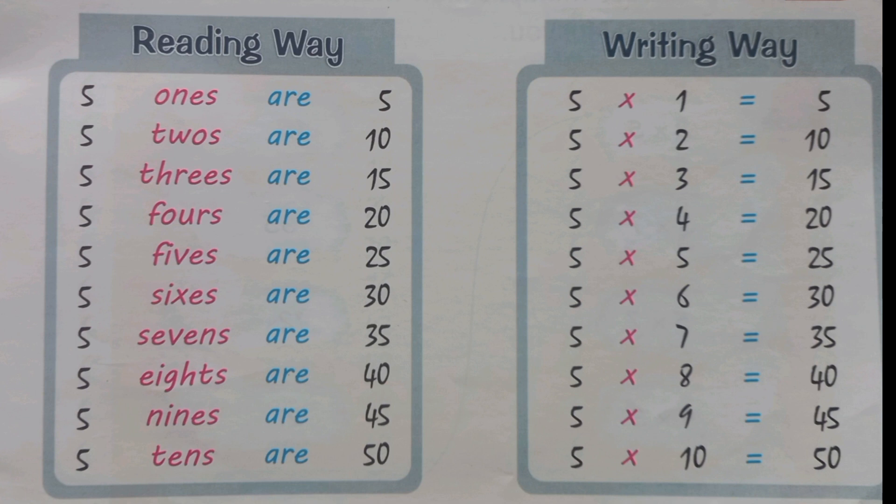Five, six's a thirty. Five, seven's a thirty-five. Five, eight's a forty. Five, nine's a forty-five. Five, ten's a fifty.